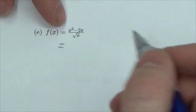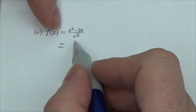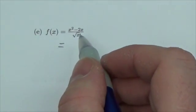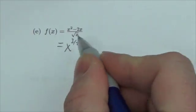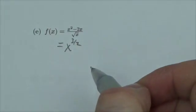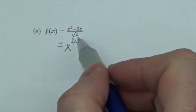So x squared divided by x to the 1/2 will simply be x to the 3/2. Remember that when I'm dividing powers I just subtract exponents, so 2 minus a half is 3/2.